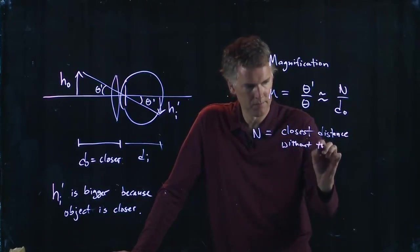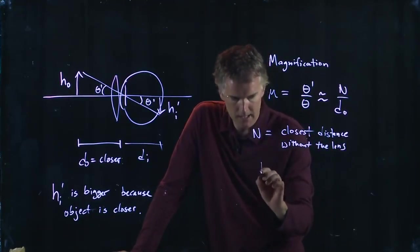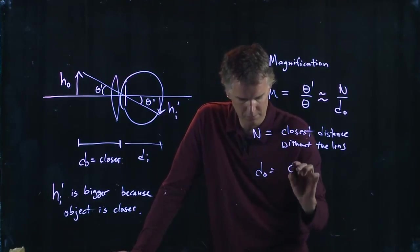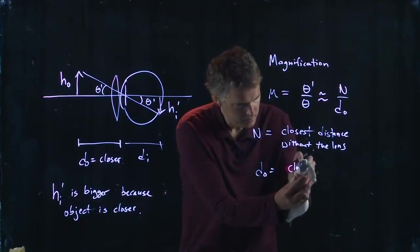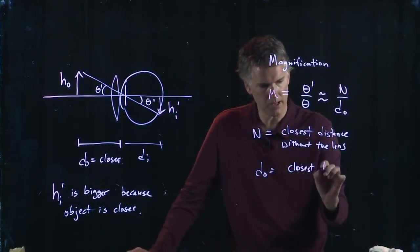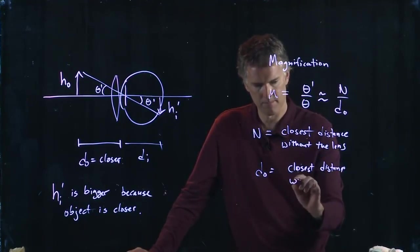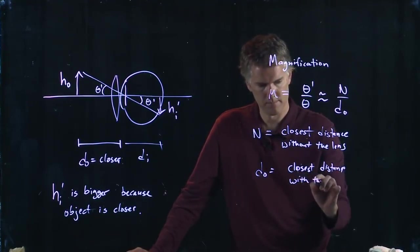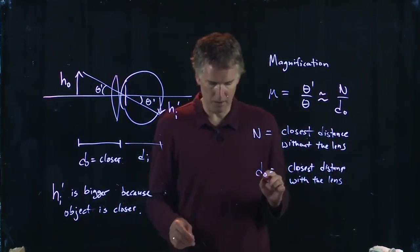divided by d_o, which is the closest distance with the lens. The magnifying glass, the extra lens.